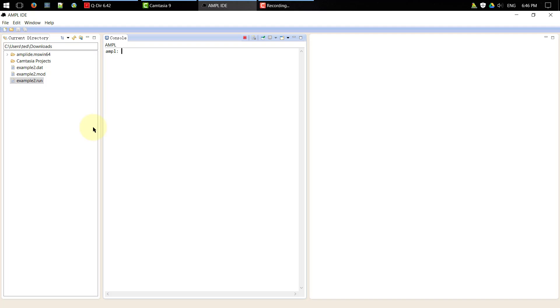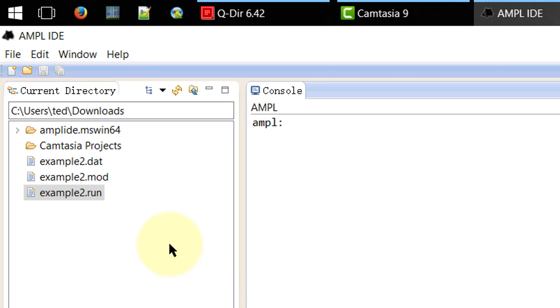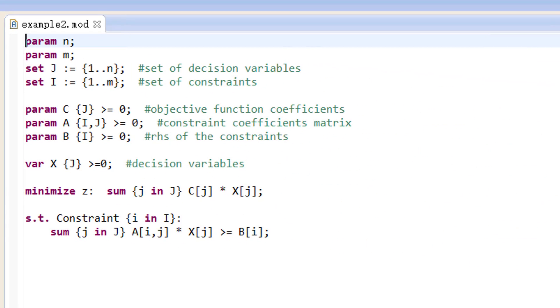Now let's start the AMPL IDE. You need to change the current directory to the folder that contains the downloaded files. Now open the model file example2.mod by a double click.